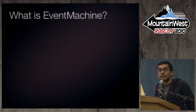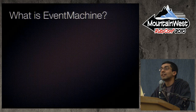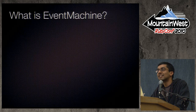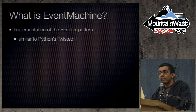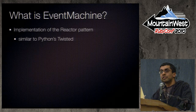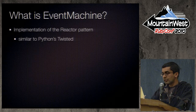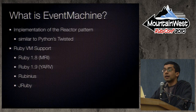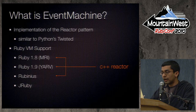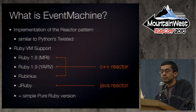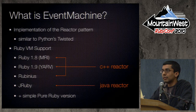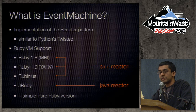What is Event Machine? Event Machine is an implementation of the reactor pattern, similar to Python's Twisted project. Event Machine currently supports a bunch of Ruby VMs, including 1.8, 1.9, and Rubinius — all three use the C++ reactor. We also support JRuby, which has its own Java reactor. In addition, we have a simple pure Ruby version of the reactor that kind of sort of works — not many people use it and it doesn't have all the features.